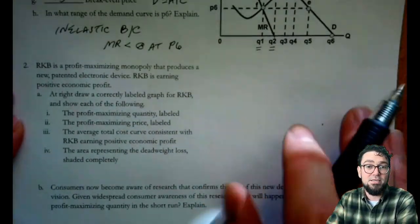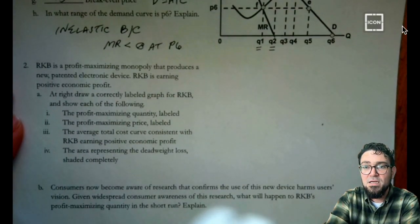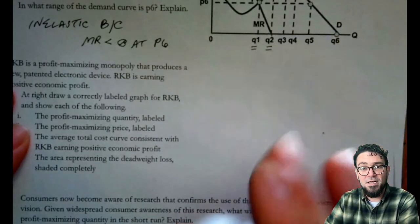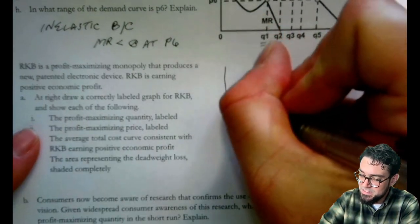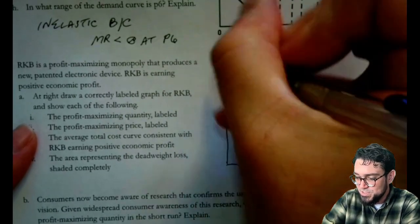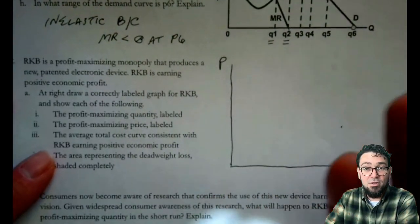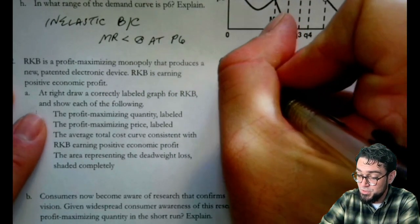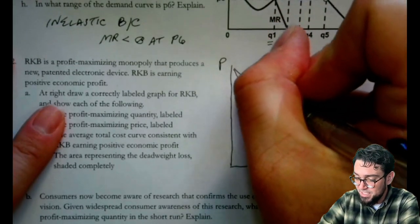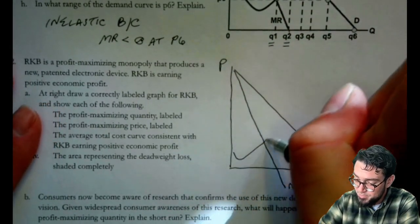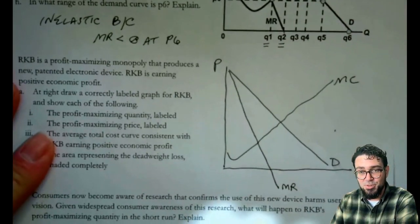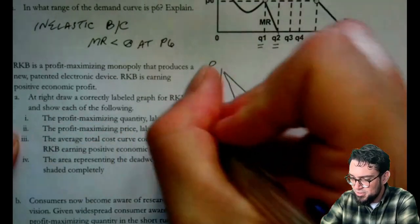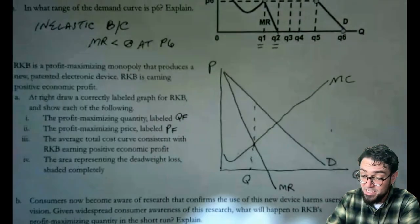Now let's take a look at question two. RKB is a profit maximizing monopoly that produces a new patented electronic device. They're earning positive economic profit. At right, draw correctly the graph and show each of the following. It's just telling me that they have a patent. So I know that this is going to be an artificial, not a natural monopoly. Artificial monopolies are created through control of inputs, through scale, through basically buying up your competitors, or maybe getting a patent or a copyright. So we're always going to have the downward sloping demand and the separated marginal revenue. And for this type of monopoly, we will have an upward sloping marginal cost curve. We know that they're producing at the quantity where MR equals MC. I'm going to say QF, and these should say probably PF and QF.